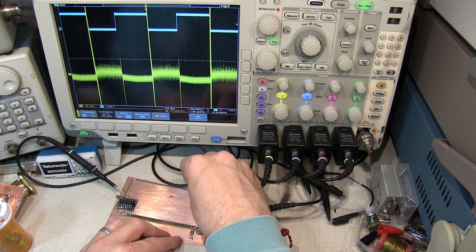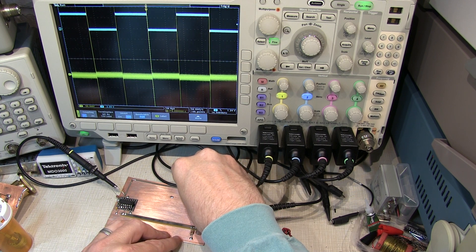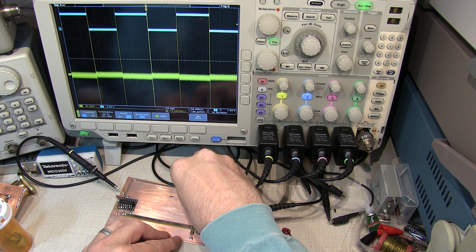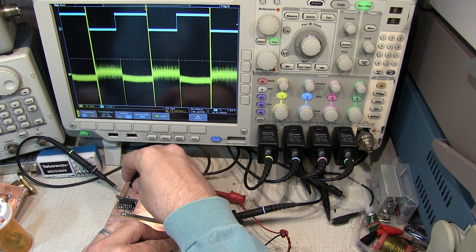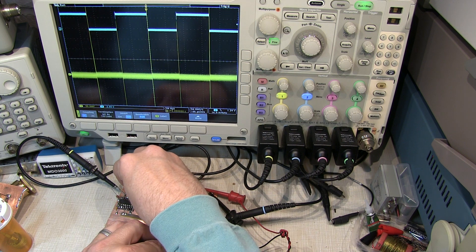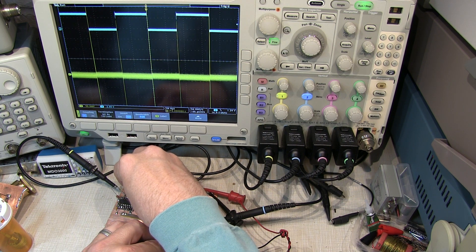So if we place this bulk capacitor right near the power entry point to this board, we'd see we've collapsed that low frequency noise down to just about nothing, maybe a tenth of a division. If I move that bulk decoupling cap closer to my active device, it's basically about the same. It's marginally better, but it's basically about the same.